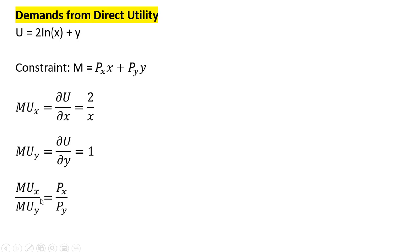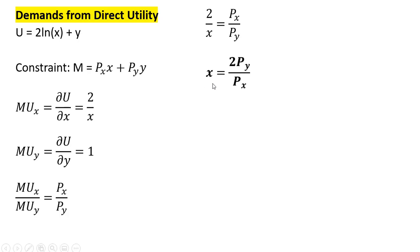Forming our utility maximizing condition, the marginal rate of substitution — the ratio of the marginal utilities — equals the ratio of the prices. Making our substitutions, MU_x divided by MU_y is just 2 over x. We solve for x, and that is the demand for good x.